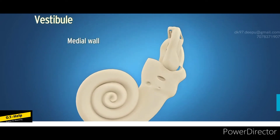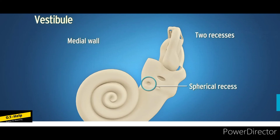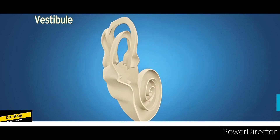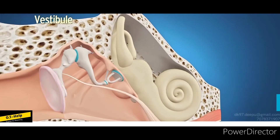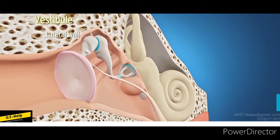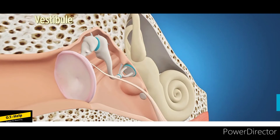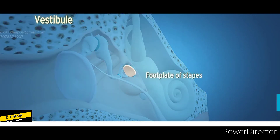The medial wall shows two recesses: the spherical recess, present in the front, which lodges the saccule, and the elliptical recess, present behind, which lodges the utricle. The lateral wall communicates with the middle ear by the fenestra vestibuli, which is closed by the footplate of the stapes and the annular ligament.